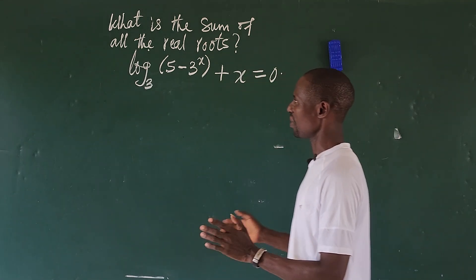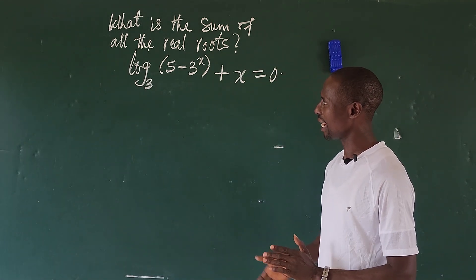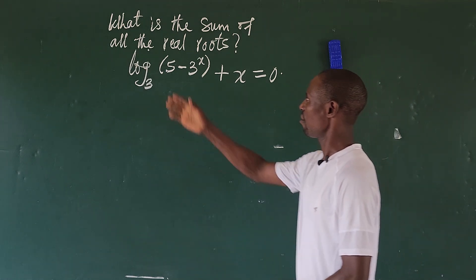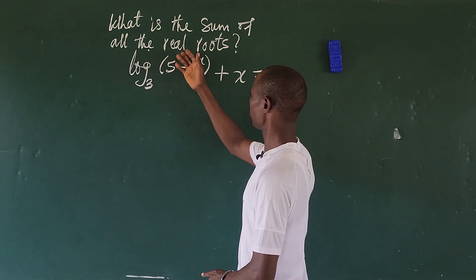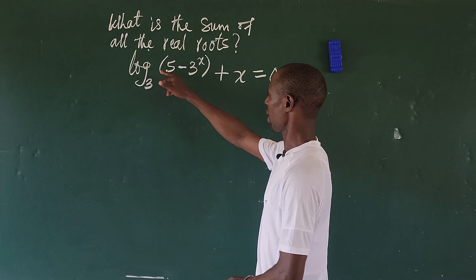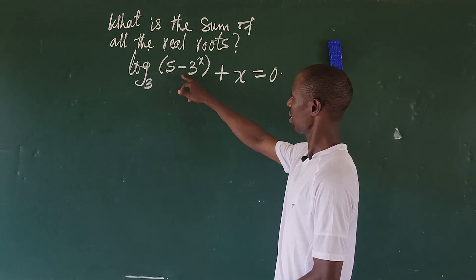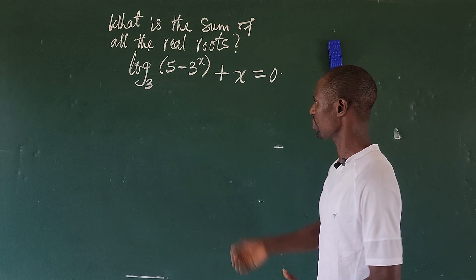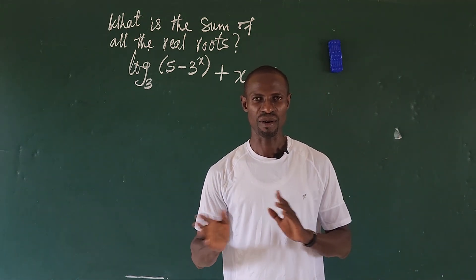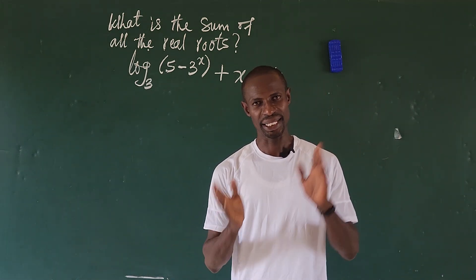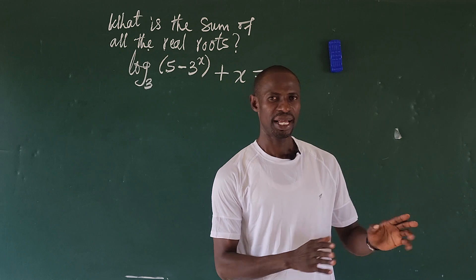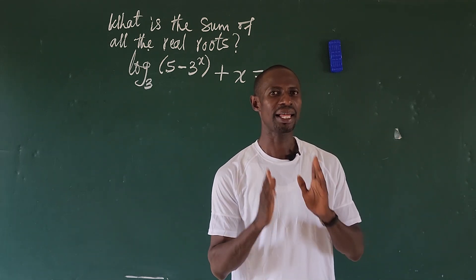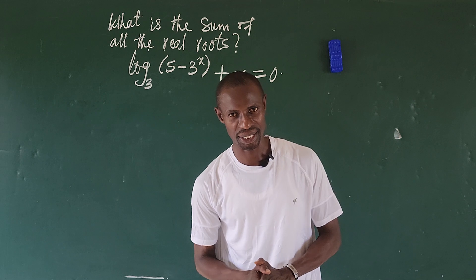Hi, welcome to this class. Today we have a right name Matuliped challenge. The question is, what is the sum of all the real roots of log bracket 5 minus 3 to the power of x, close bracket, plus x squared equal to 0? So we have to solve for the real roots, discard the imaginary roots, then no matter the number of real roots we have, add them together and see what that gives us.